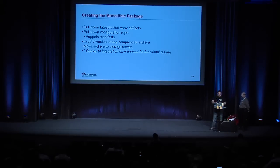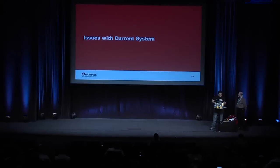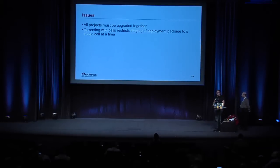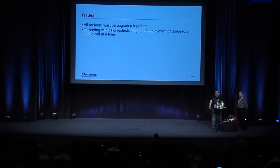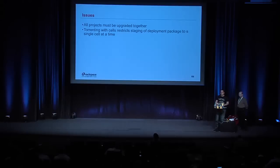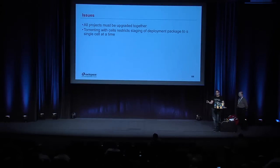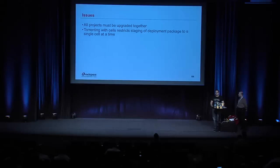There are some issues with our current system. The two main ones: all projects must be upgraded together — you can't upgrade them separately. Any time we do a Nova deployment, we're also doing a Neutron deployment and Glance is being deployed simultaneously, so we always have to test and verify everything. We also have an issue with torrenting being limited per cell due to network restrictions, which over time adds up — Rackspace is currently running upwards of 144 cells in production over six regions.